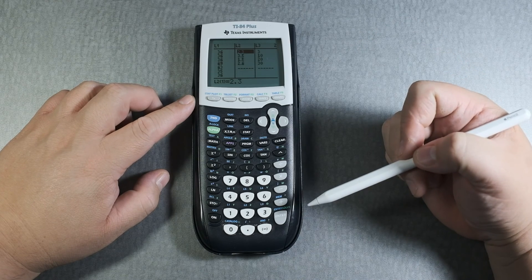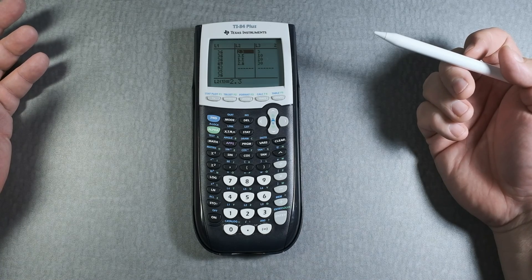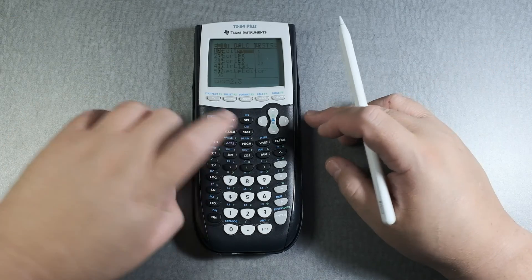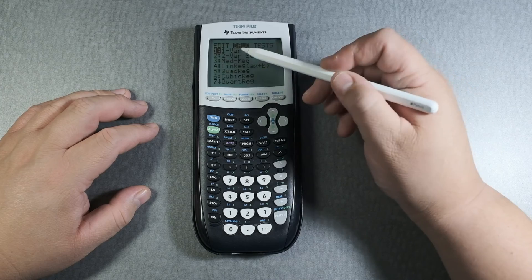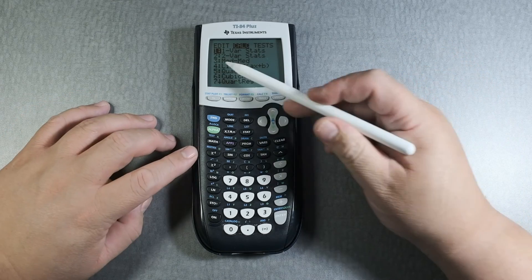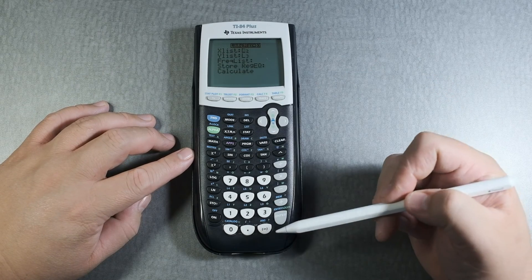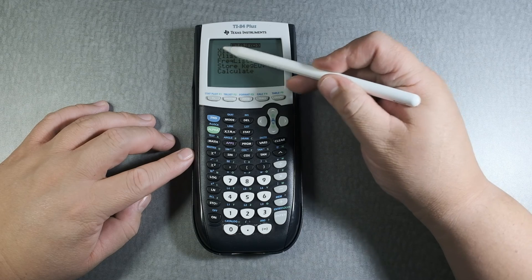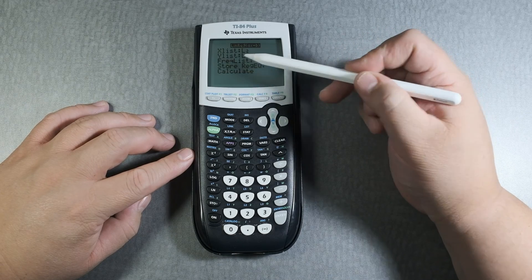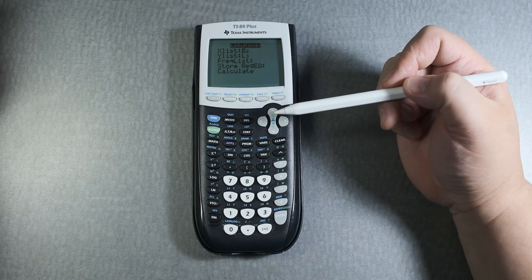And what we're going to do is find the correlation coefficient. How do we do that? Click on stat, we're going to calc, and we go to lin reg or linear regression. We can scroll down to 4 or we can click 4. Then x list, L2, y list, L3. So my L2 column was x and my L3 column was y.